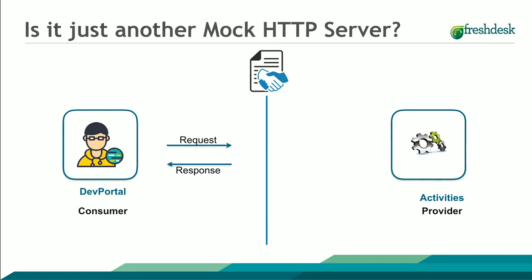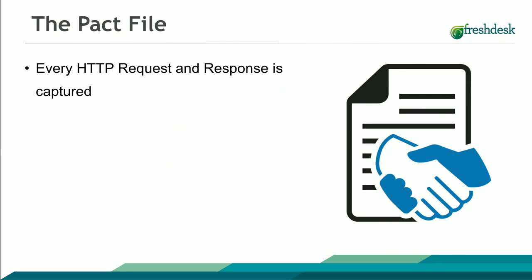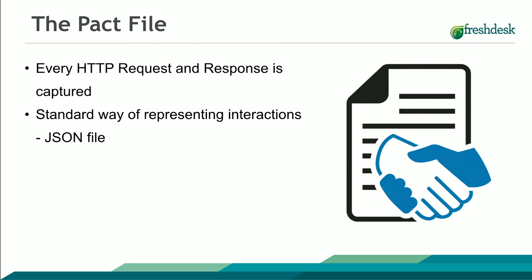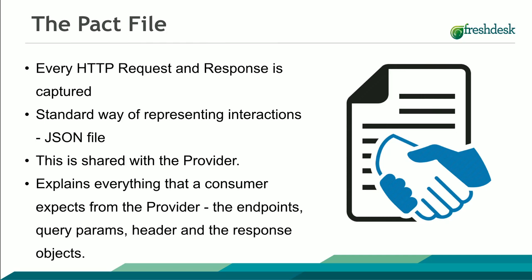The Pact file is a collection of all requests and responses between two services, and it is nothing but a JSON file. It contains all details like the endpoints, the query params that are needed, the headers, and the response object received. Now that we have the Pact file, let's see how it is actually used on the provider side.